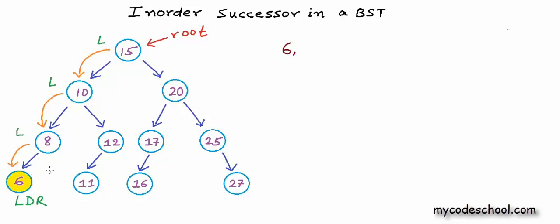The recursive call corresponding to this node will finish and we will go back to the call corresponding to its parent. If we come back to a node from its left child, then it will be unvisited, because we can't visit a node until its left is done. So when we are coming back to 8, it is unvisited, so we can simply visit it — read the data. There is nothing in right of this node, so right is also done. Now call for this node finishes and we go back to its parent. We are coming back to node with value 10 from left, so it is unvisited, and we visit 10.